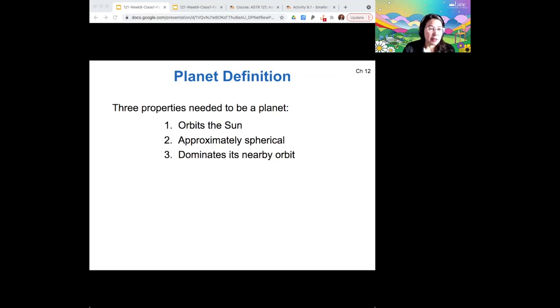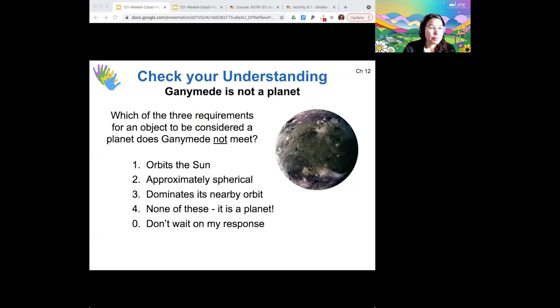So let's just apply this idea to a few things that are not planets. So remember Ganymede, this is one of the Galilean moons of Jupiter. Which one of the criteria does Ganymede fail?